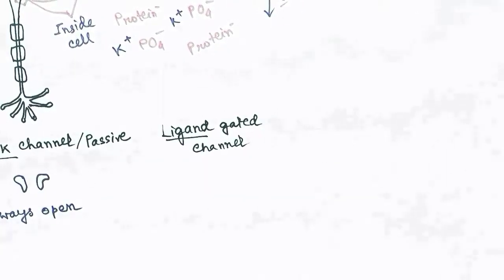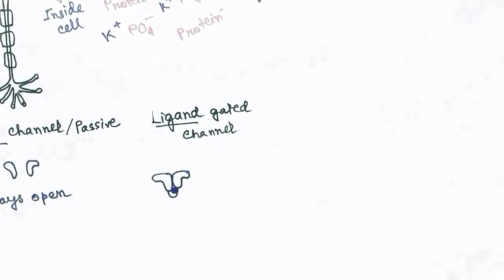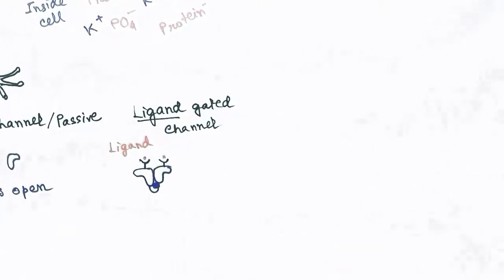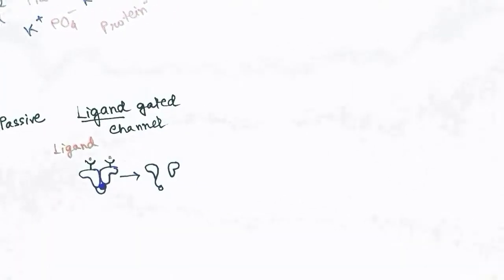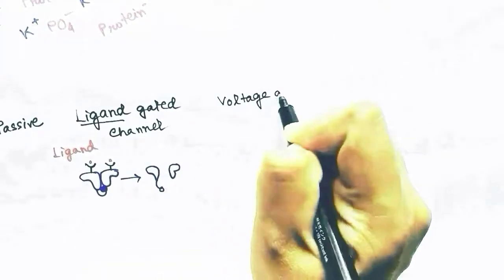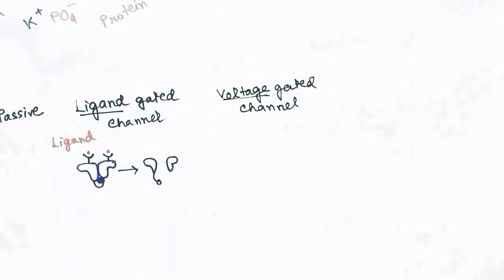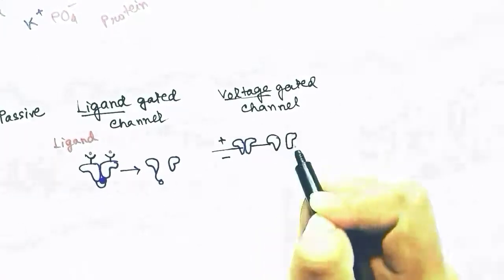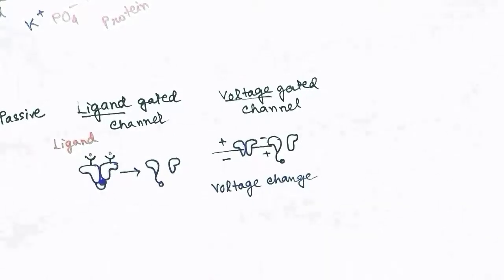The second channel is the ligand-gated channel, which has receptors for ligands. The ligands may be neurotransmitters like acetylcholine. When the receptors attach to ligands, the channels get opened. Voltage-gated channels are opened by the change of voltage of the membrane — that is, the arrangement of positive or negative charges around the membrane.